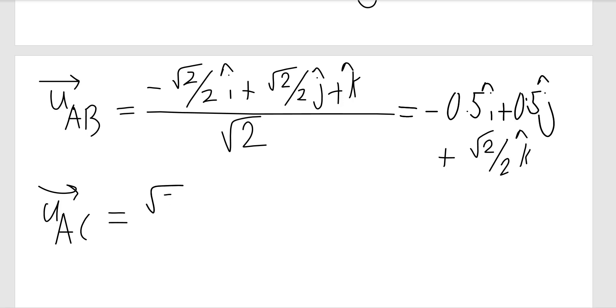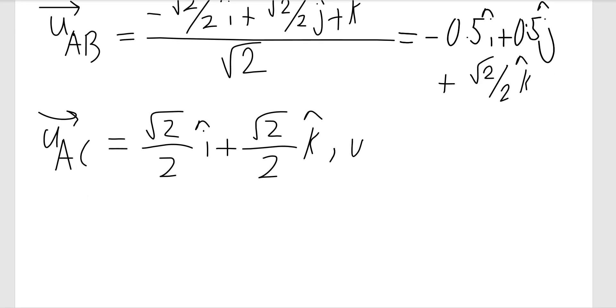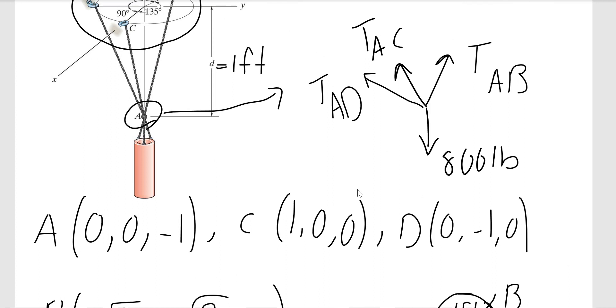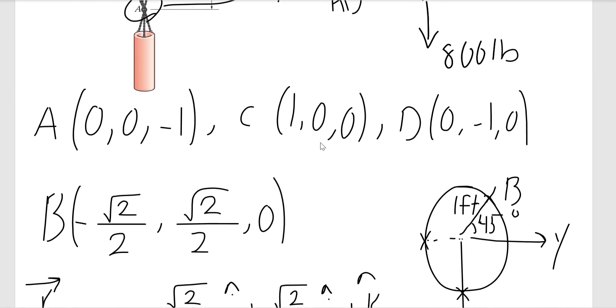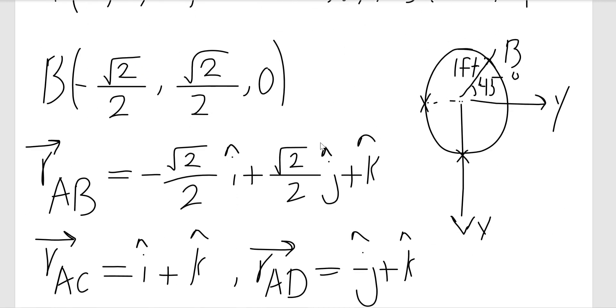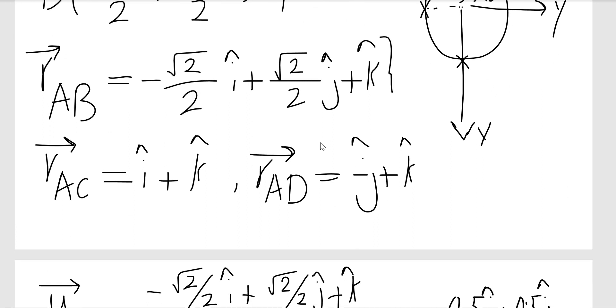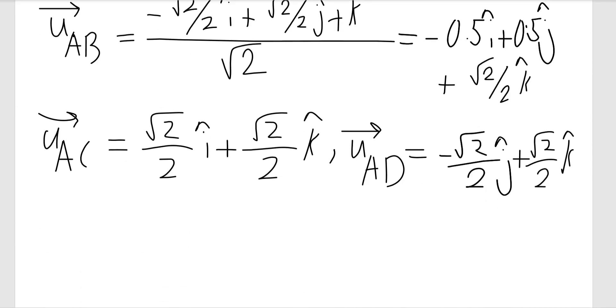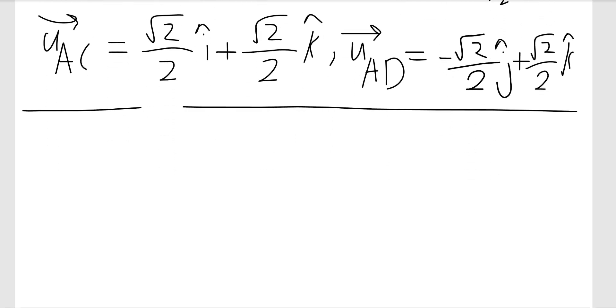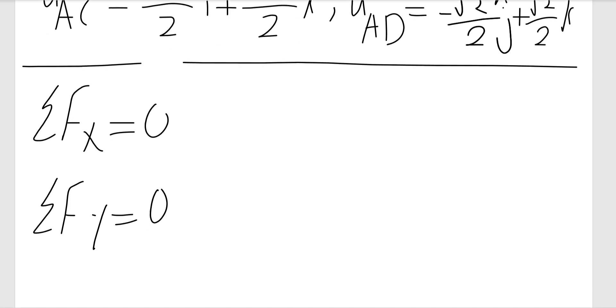uAC would be (√2/2) i + (√2/2) k, and uAD would be (√2/2) times negative j plus k. So if I can find my vectors, I can find my forces in Cartesian form. TAC is TAC times the corresponding unit vector. I need to pay attention to write the unit. So summation of forces in X equals 0, summation of forces in Y equals 0, summation of forces in Z equals 0. I'm dealing with 3D equilibrium so I have three equilibrium equations.